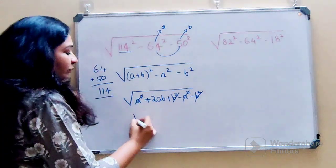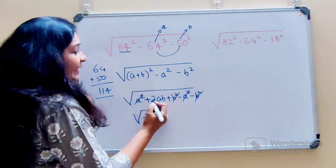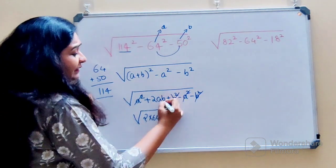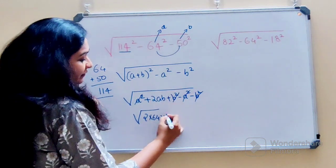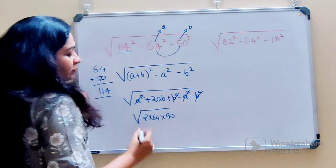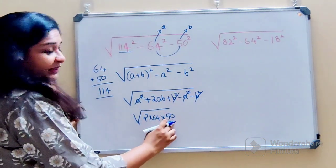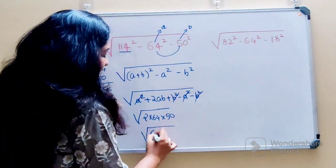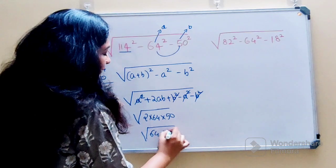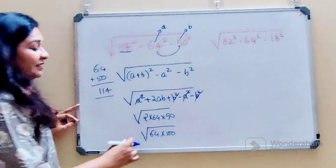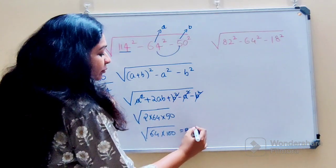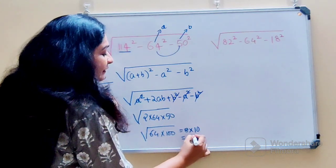So you are just left with the square root of 2AB, which is 2 times 64 times 50. When you multiply 2 and 50, you get 100. So we have square root of 64 times 100. When you take the square root of each value, you get 8 times 10, so your final answer is 80.